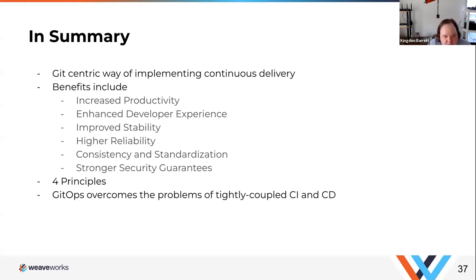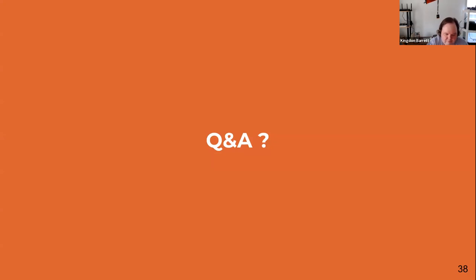To summarize the key points of GitOps: you have declarative configuration that is version-controlled, with immutable artifacts in a single source of truth — the Git repository — and also automated delivery so your changes can be deployed as quickly as they're created. The benefits include stability and reliability of your deployments, consistency and standardization in your deployment interfaces, security guarantees, and better developer experience. It's much better when pull requests are also the interface you use to communicate with your clusters, which is part of shifting left.